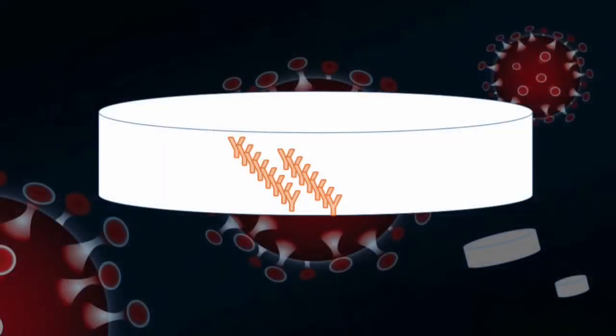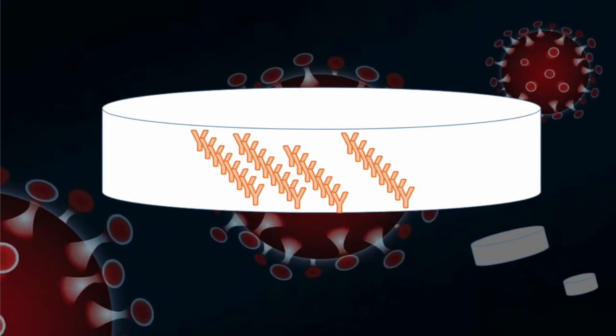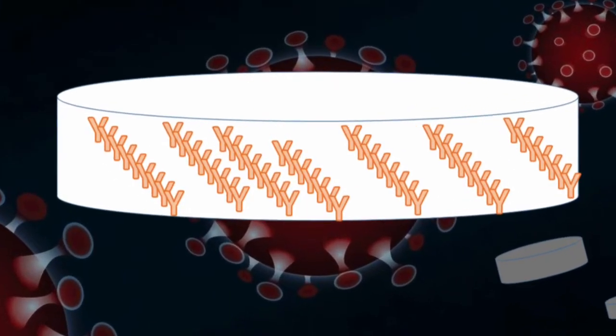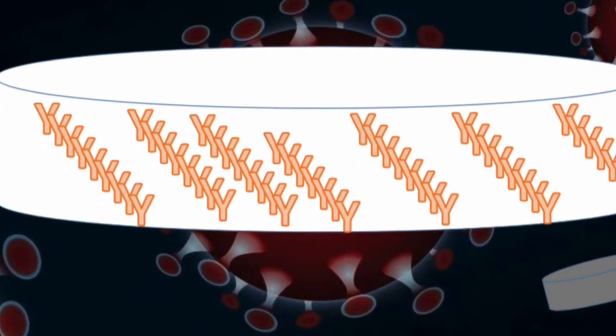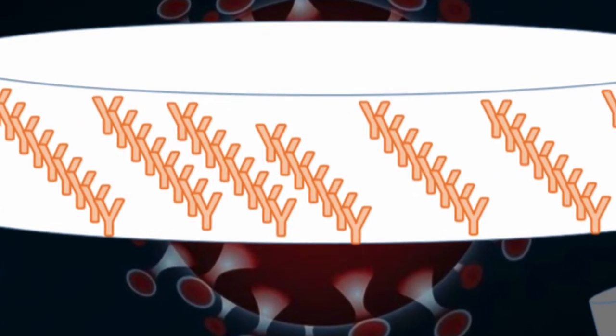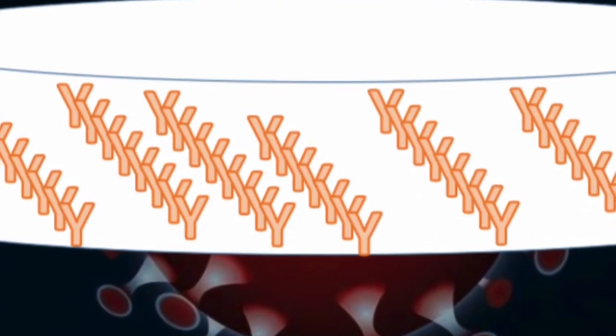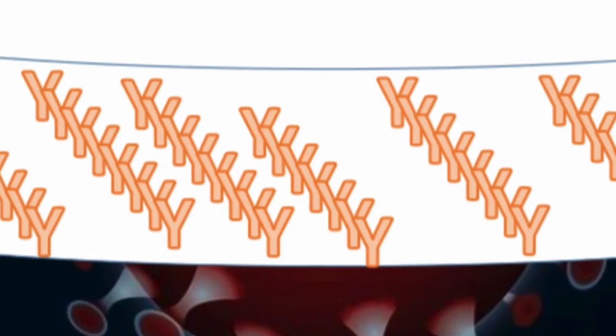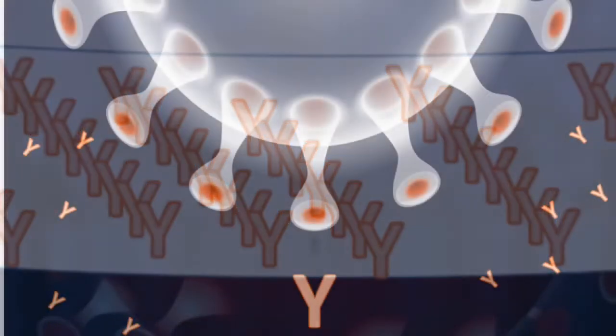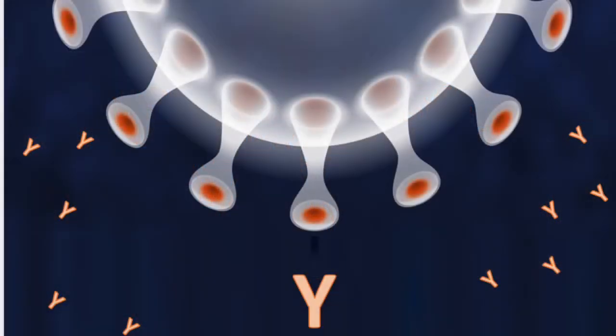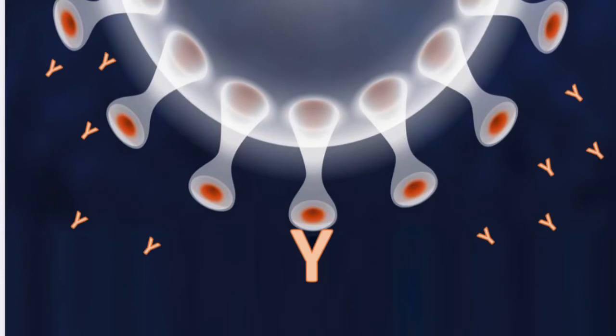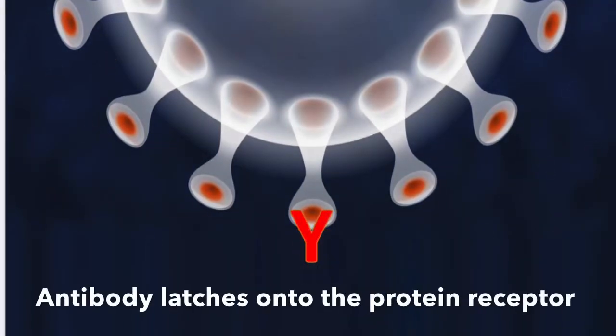White blood cells have a library of antibodies that have specific structures that can fit into specific receptors of certain viruses and bacteria that have visited the body in the past. As soon as a foreign body is detected, the search for the right antibody starts, and as soon as the appropriate antibody is found,